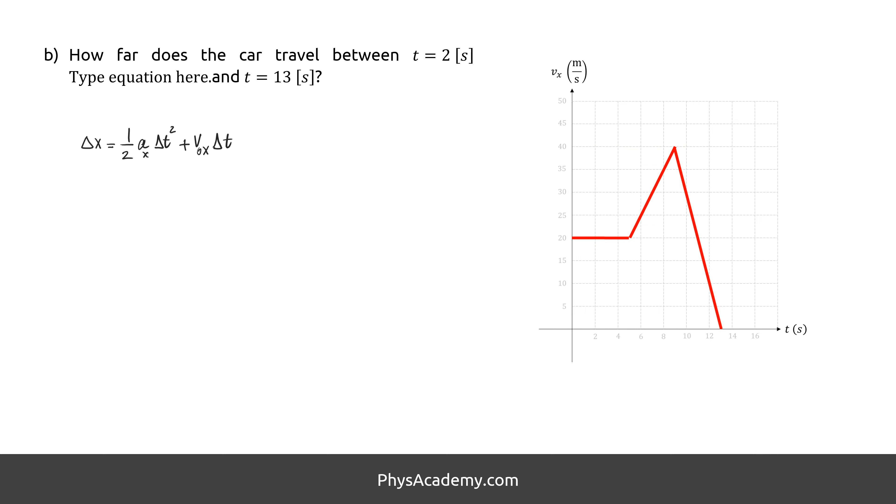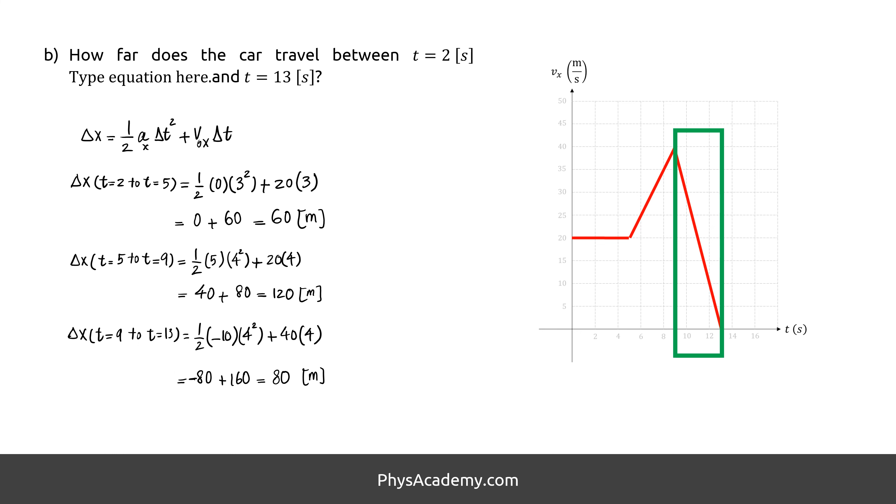In the second method, we use the equation of motion for constant acceleration. Using the provided values of each part separately, we get plus 60 meters of displacement for the first part of the motion, plus 120 meters for the second part, and plus 80 meters for the third part. The total displacement from 2 seconds to 13 seconds will be 260 meters.